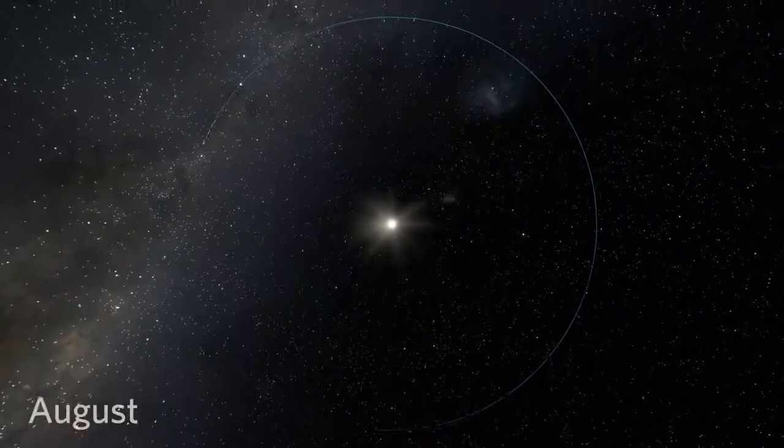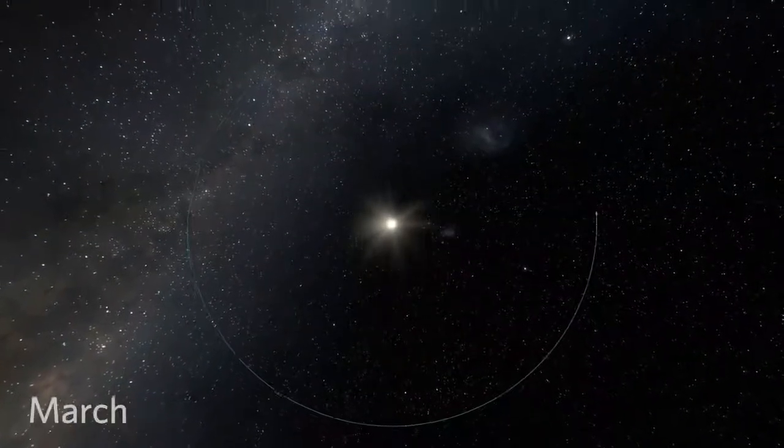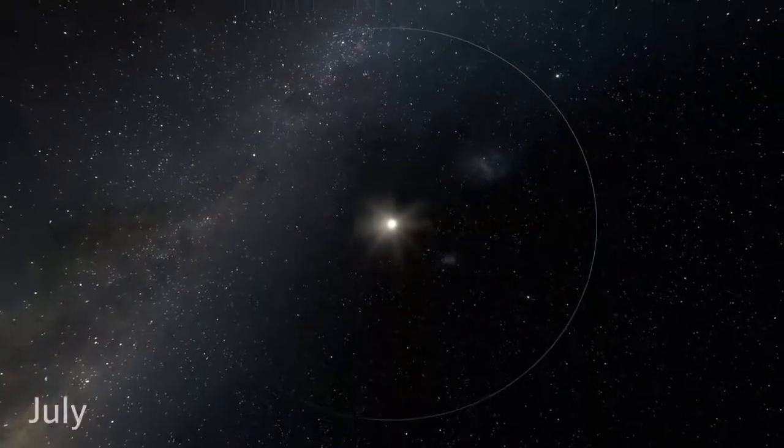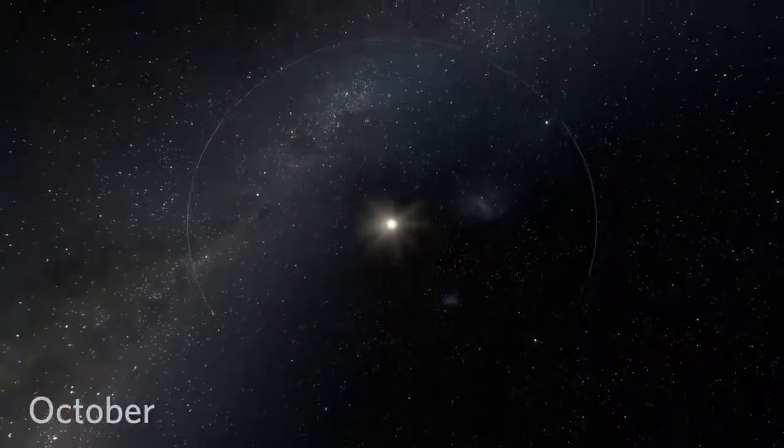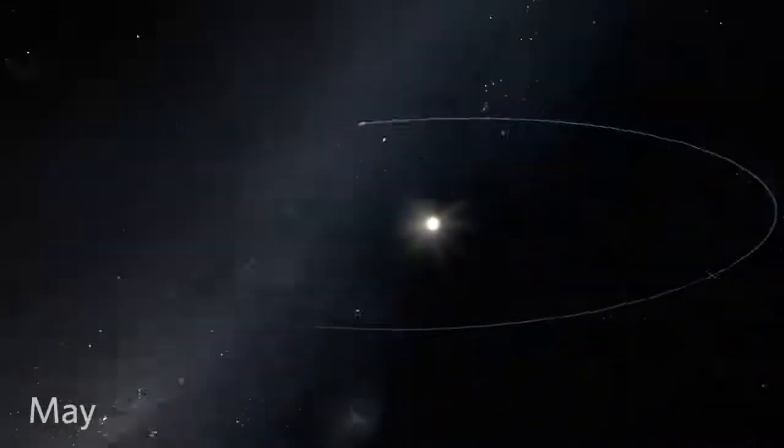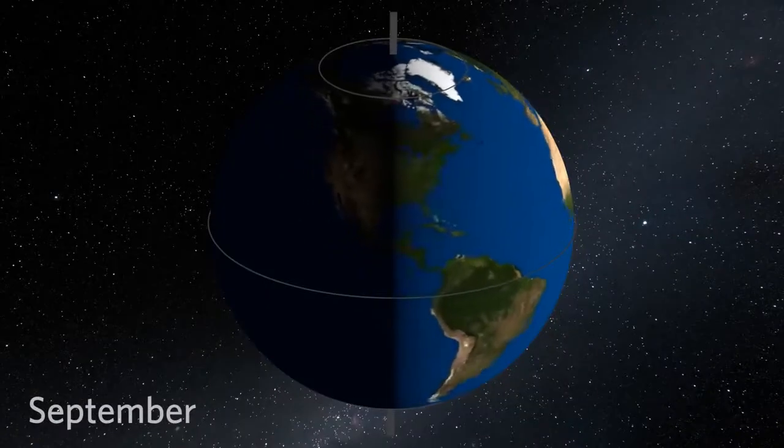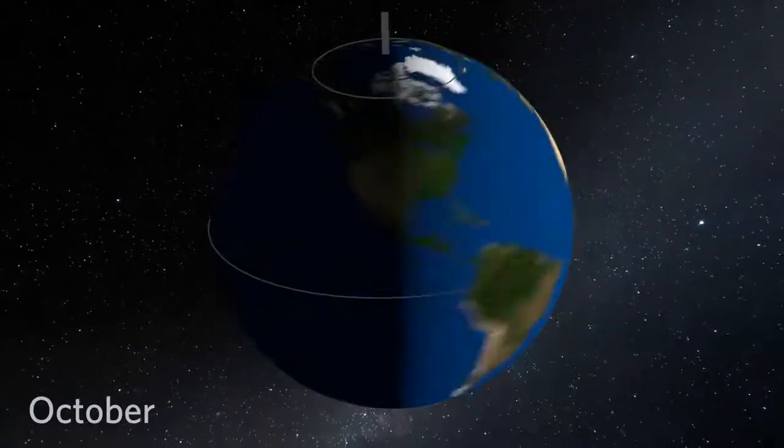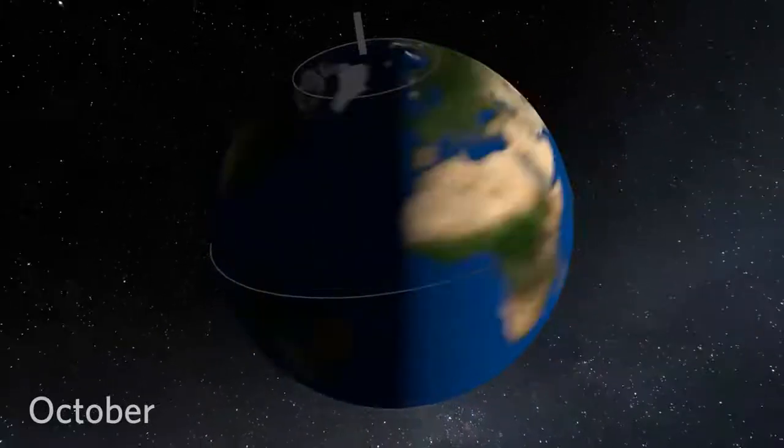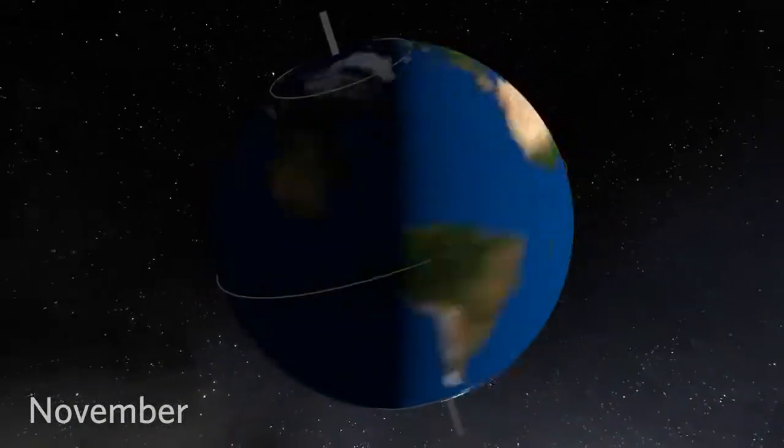You know that Earth orbits the Sun, right? And that it takes a full year for our planet to complete its orbit. Earth also rotates like a slightly tilted spinning top. Earth remains tilted in the same direction all year round as we orbit the Sun, but that means the Sun's light shines differently on Earth at different times of the year.